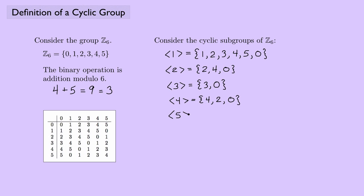How about the cyclic subgroup generated by 5? I would start with 5. 5 plus 5 is 10, but 10 mod 6 is 4. 4 plus 5 is 9, but 9 mod 6 is 3. 3 plus 5 is 8, but 8 mod 6 is 2. 2 plus 5 is 7, and 7 mod 6 gives me 1. Then 1 plus 5 is 6, and 6 mod 6 is 0, and I'm back where I started.